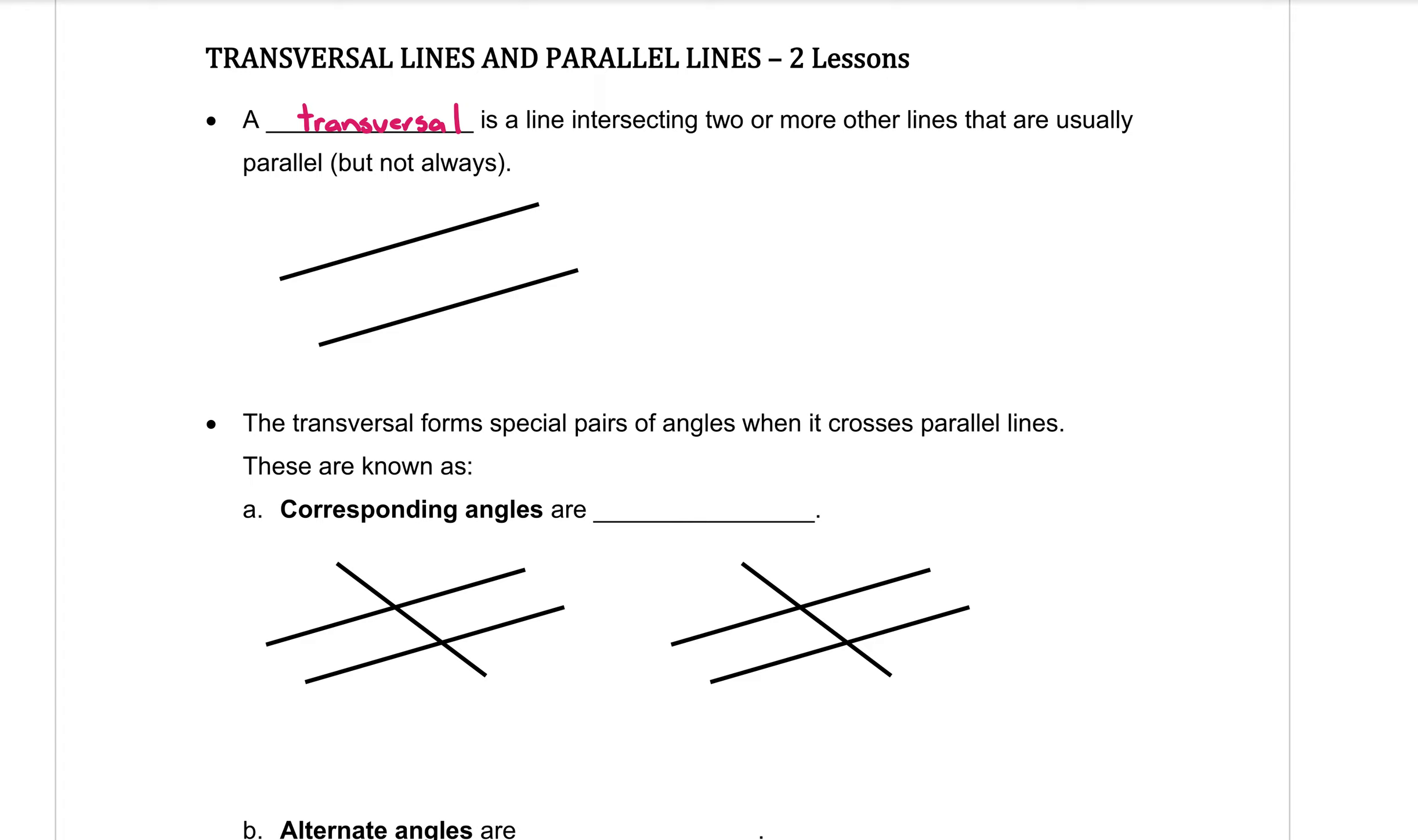So here we have two lines. If I draw a straight line that crosses through both of those lines, that line will be called a transversal. Just a fancy name.